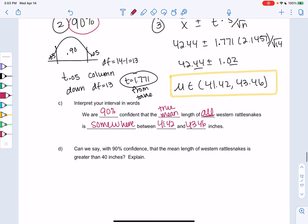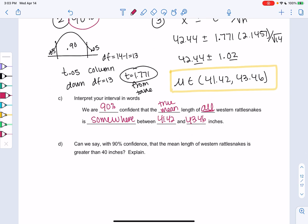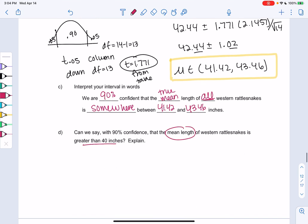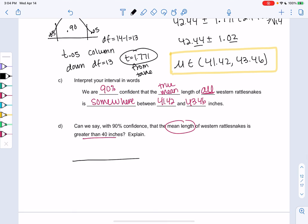And based on that, can we say, maybe you're super scared of rattlesnakes and you're like, 40 inches is very intimidating. Can we be confident that the mean length of all rattlesnakes is greater than 40 inches? So I like looking at number lines here. So I like to draw the interval on the number line.